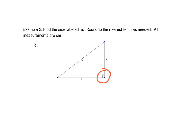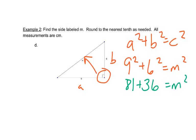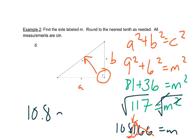Again we look for our right angle. Across from it is M, so M will be our C, and the other two sides are A and B. So we have 9 squared plus 6 squared equals M squared. That's 81 plus 36 equals M squared, which gives us 117 equals M squared. We take the square root of both sides and get 10.8166... We're rounding to the nearest tenth, and the number after it is 1, so we leave the 8 as 8. M is 10.8 centimeters.